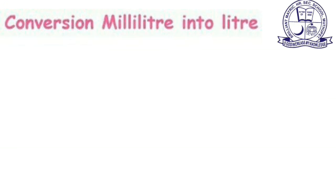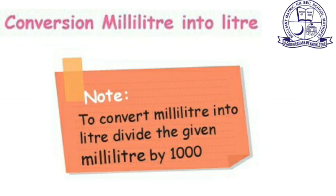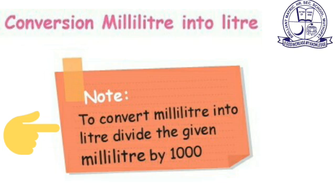Conversion of milliliter into liter. To convert milliliter into liter, divide the given milliliter by 1000. Whatever number of milliliters you have, divide that number by 1000 to get liters.